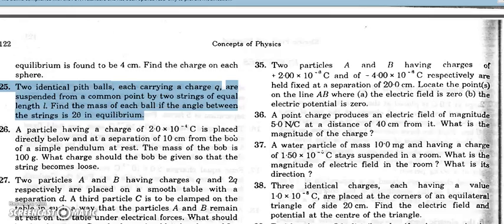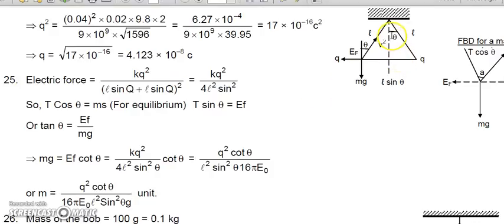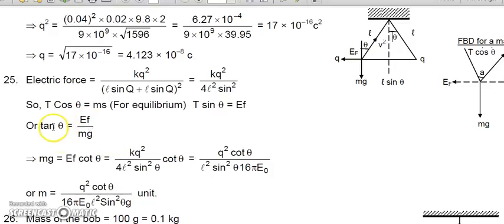Question number 25: two balls with equal charges are suspended from strings of length l, making an angle 2θ in equilibrium. The separation between the charges is 2l sin θ, so the electric force is kq²/(2l sin θ)². Again, tan θ equals electric force divided by mg. Since we know the electric force and θ, we can find mg — and hence the mass of each ball.